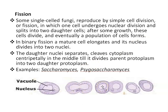In this diagram you can see the fission process. A mature cell first elongates, then its nucleus divides into two nuclei, and these two daughter nuclei then separate by the division of cytoplasm. Cytoplasm divides by the formation of a septum in the middle of the cell, and ultimately two daughter cells are formed. This type of reproduction is found in yeast, in Saccharomyces.